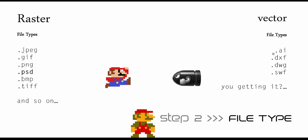On the vector side, we have AI (Illustrator documents), DXF (digital exchange file), which is an AutoCAD format — if you're ever transferring between softwares and don't know if they'll talk to each other, DXF is the format to use. Then DWGs, another AutoCAD format, and SWF Shockwave files, which you'll see used for web animations. A lot of modeling softwares follow this same principle: mesh modelers are based on raster — you have a set of coordinates and zooming in gives no more detail — whereas NURBS models, like in Rhino, are based on mathematics and can be infinitely smooth.